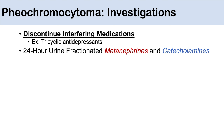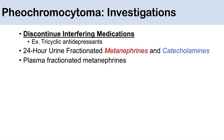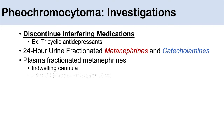Investigations include a 24-hour urine fractionated metanephrines and catecholamines, since metanephrines are breakdown products of catecholamines. Alternatively, we can check plasma fractionated metanephrines from an indwelling cannula — not from a fresh puncture, as that may cause a catecholamine surge. The sample should be taken after about 30 minutes of supine rest.